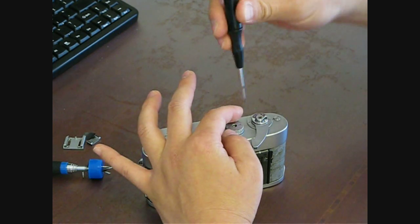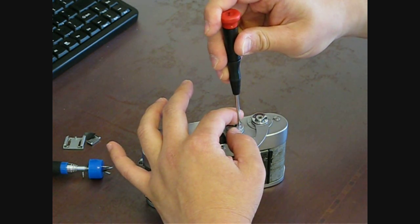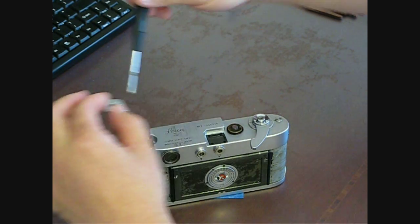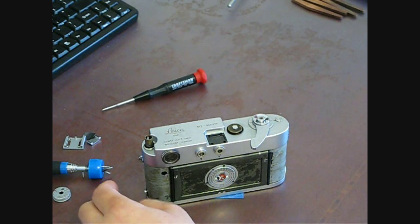So the next thing is we'll go ahead and remove the speed dial. That was pretty easy. Comes off easily.